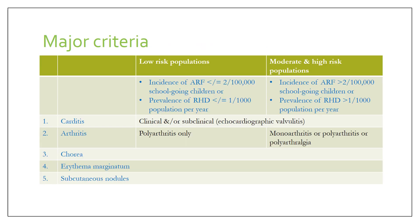Low-risk populations are those in which the incidence of acute rheumatic fever is less than or equal to two per hundred thousand school-going children, or the prevalence of rheumatic heart disease is less than or equal to one per thousand population per year. Moderate-to-high-risk populations are those in which the incidence is more than two per hundred thousand school-going children, or the prevalence of rheumatic heart disease is more than one per thousand population per year.